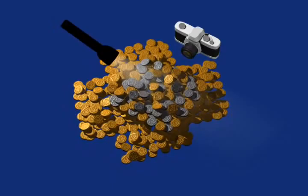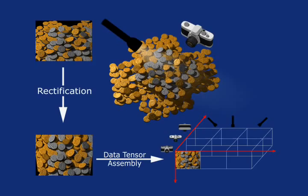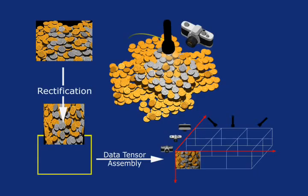Tensor Textures is a new image-based texture mapping technique. We begin by acquiring several images of a 3D scene from different viewpoints and illuminations. These images are rectified and assembled into an image data tensor.